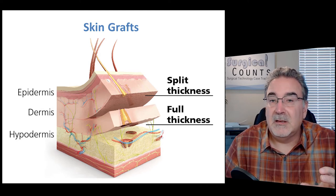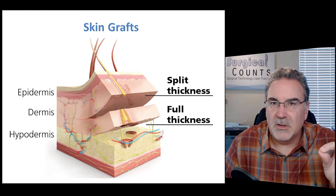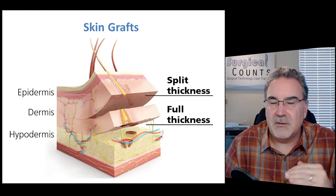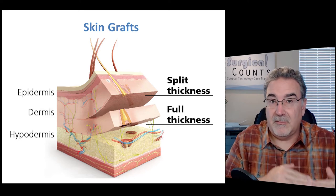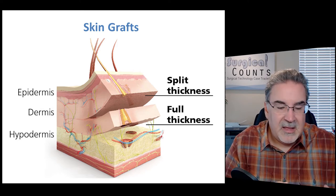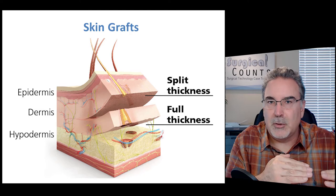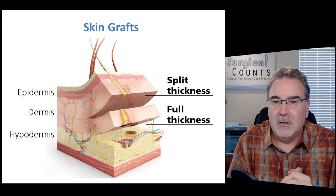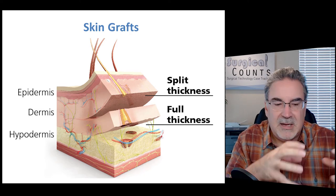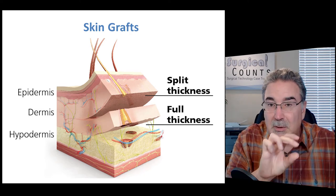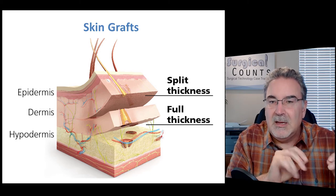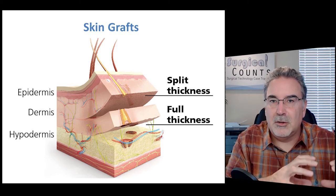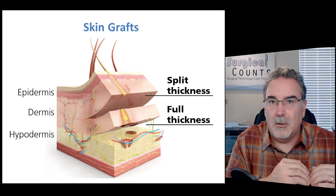With a split thickness graft, we're taking the epidermis and just part of the dermis, leaving much of the dermis in place so that the donor area can then regrow that skin pretty easily. So a split thickness skin graft takes a little bit of the top layer — the epidermis and just a little bit of the dermis — leaving the rest to regrow.